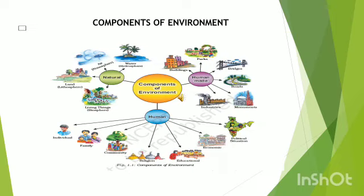You are going to see the components of environment in figure 1.1 given at page number 2 of your book. Components of environment means the different parts of environment. First is natural environment, second is human beings as part of environment, and third is human-made environment.